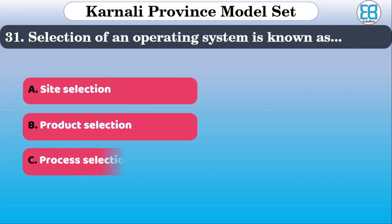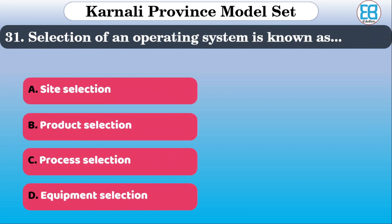The selection of an operating system is known as what? The options are: short selection, product selection, process selection, equipment selection. The correct option is process selection.